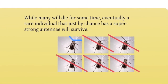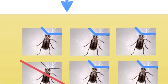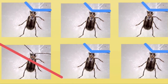The good thing, however, will not last forever. While many of these susceptible individuals will die for sometimes a very long time, eventually a rare individual that just by chance has super strong antennae will survive. These super-antennae insects will be rare at first, but because they have an obvious advantage — they're alive — they will mate and reproduce, and because the selection for the super-antennae trait is high, the resistant insects will quickly become very abundant. With rampant resistance development, most individuals are no longer susceptible to the toxin.